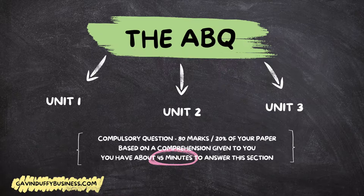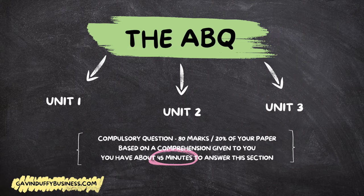In terms of the ABQ, it is on units one, two, and three this year, so you'll get a question on each. There are 80 marks going for it, which is 20% of your paper — similar to the shorts, which are also 80 marks and 20% of your paper. For the ABQ there is no choice at all; in the shorts you get to answer eight out of 12, but in the ABQ you have to do the question.